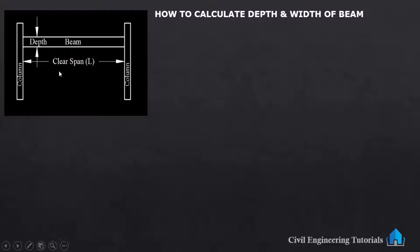Now this is the column, this is another column, and this is the beam. This is the clear span or length of beam. This is the depth of beam.